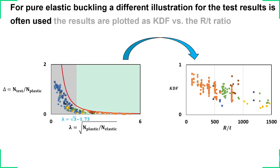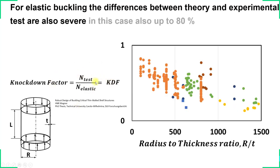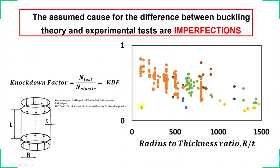For elastic buckling, in aerospace engineering we use an illustration with the knockdown factor (KDF) and the radius-to-thickness ratio (RT). The knockdown factor is the ratio of the test load to the elastic load. Thicker shells seem to have less reduction of the buckling load compared to thin shells. The assumed reason for these differences between the theoretical elastic load and the test load are imperfections.